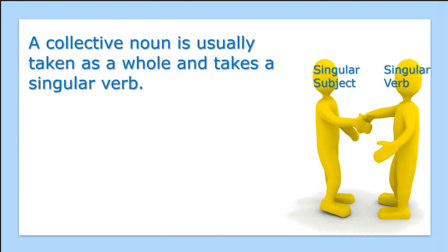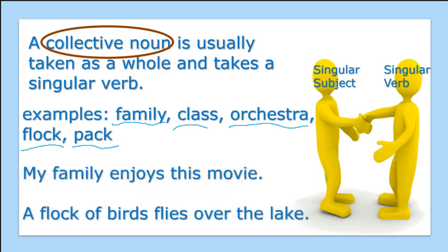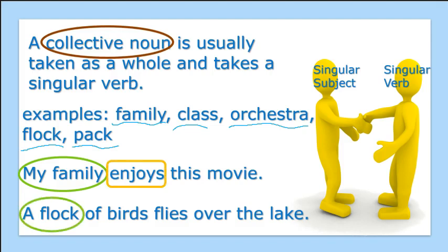A collective noun is usually taken as a whole and takes a singular verb. For example: family, class, orchestra, flock — such as a flock of birds — or a pack of wolves. Let's look at some example sentences. 'My family enjoys this movie' — 'my family' is a collective noun taken as a singular subject, and the verb is also singular. 'A flock of birds' — again, a singular subject with a singular verb.